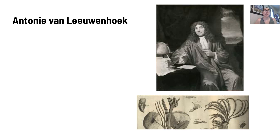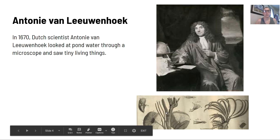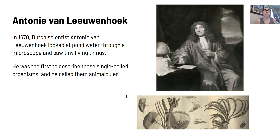Antony van Leeuwenhoek was a Dutch scientist who in 1670 looked at pond water through a microscope and saw tiny living things — really tiny small organisms. He was the first to describe these single-celled organisms and he called them animalcules.